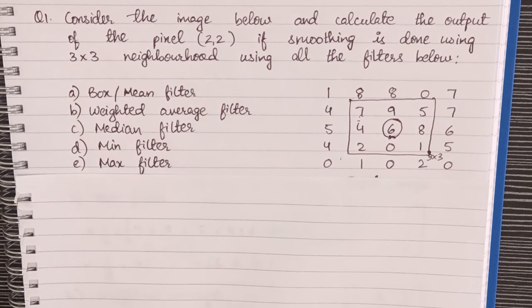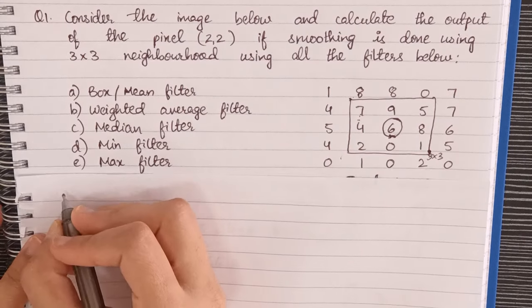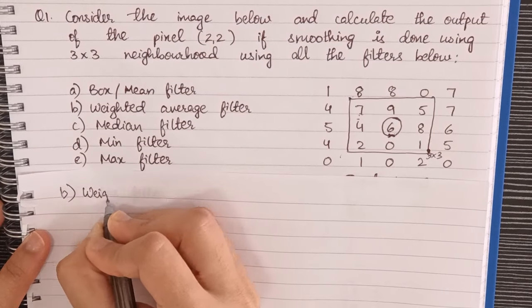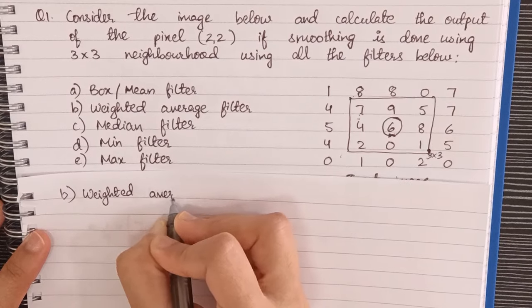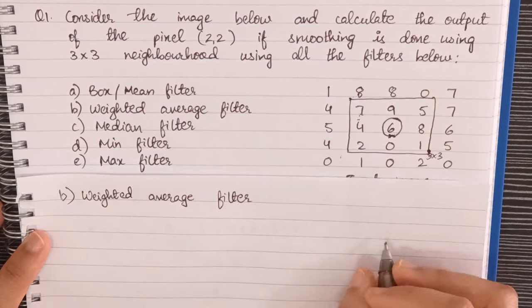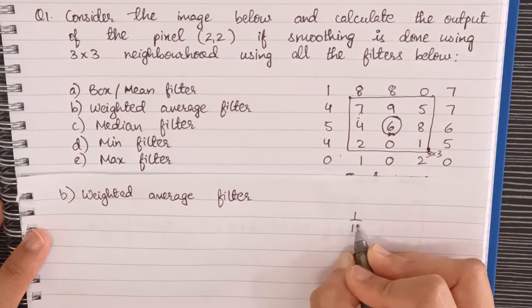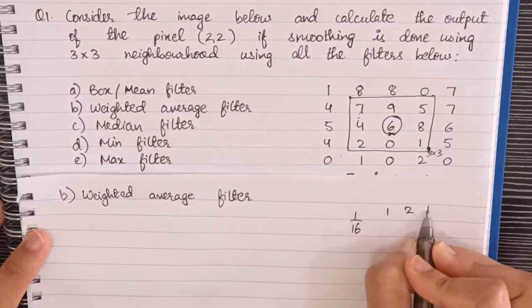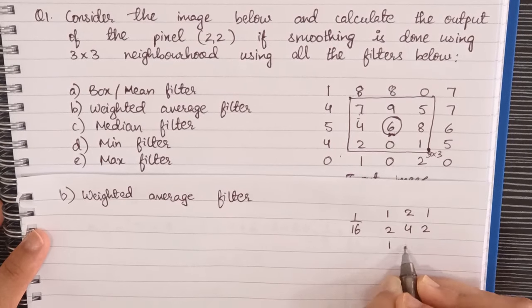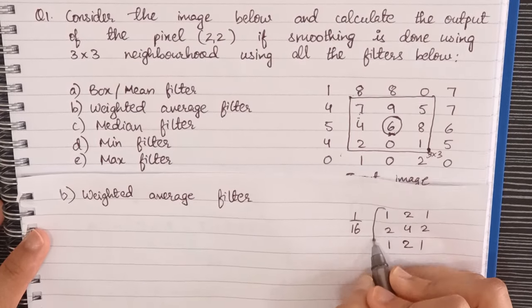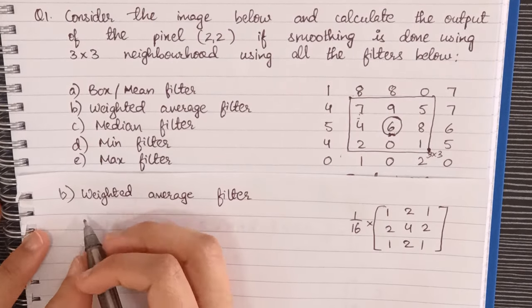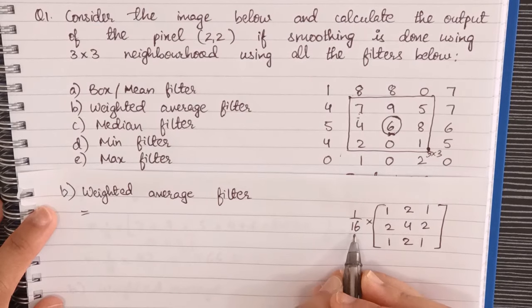Next we have weighted average filter. The mask for this is 1 by 16 into 1 2 1, 2 4 2, 1 2 1. We'll take 1 by 16.